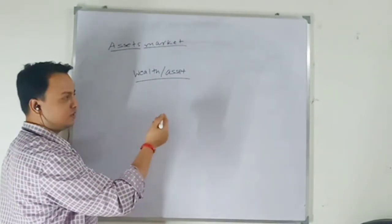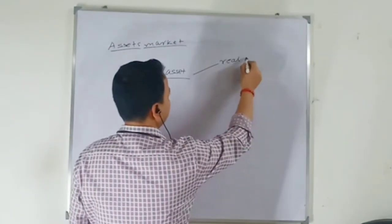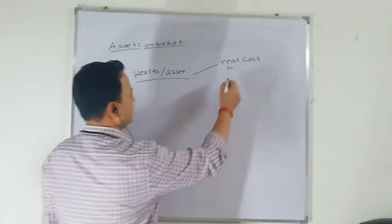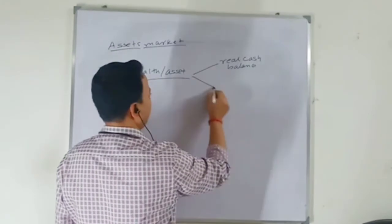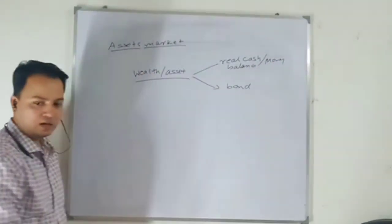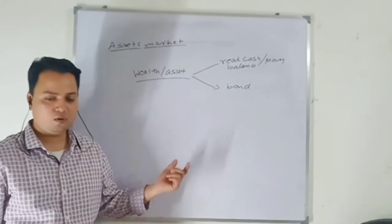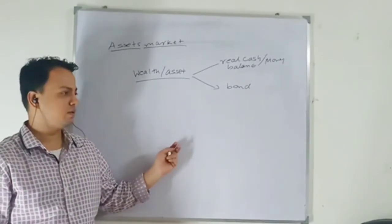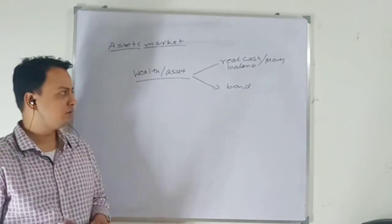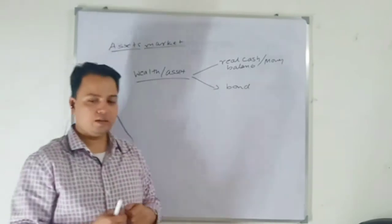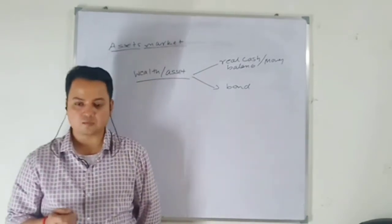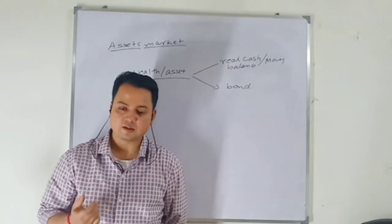Wealth or assets in the Keynesian formulation is kept in the form of idle cash balance and bond. This will also be called money — kept in the form of money. In the cash balance approach, associated with Marshall and Keynes, we talk about why money is demanded, what is the reason that money is demanded, apart from transaction purpose, because money acts as a store of value.